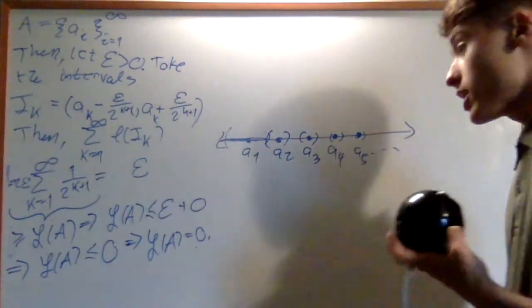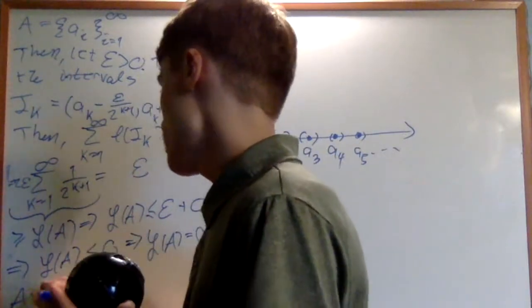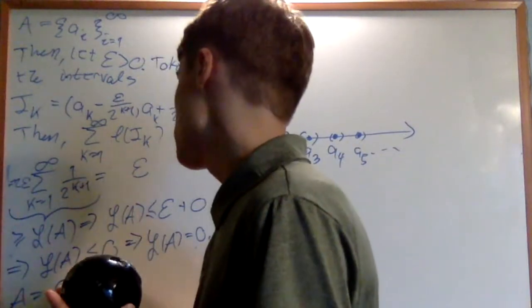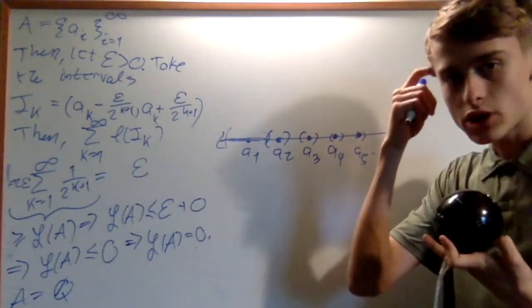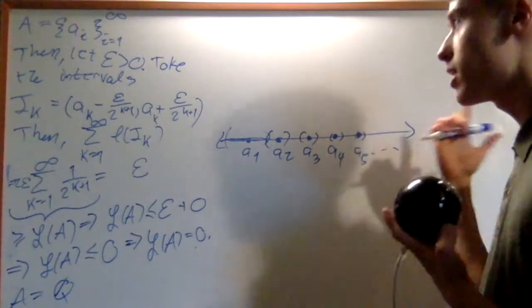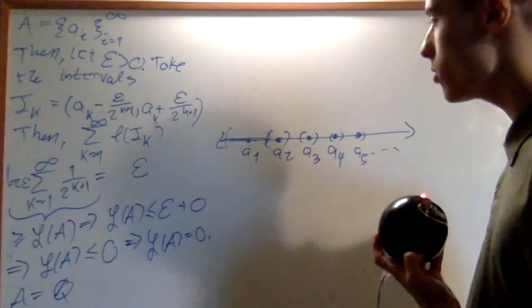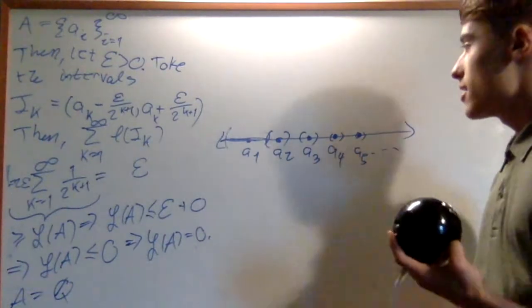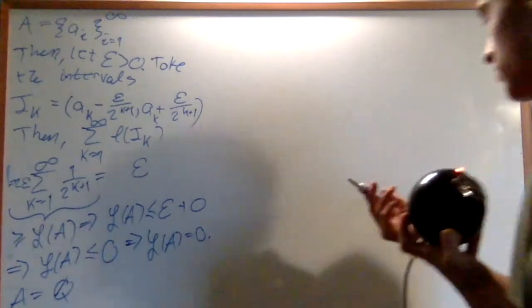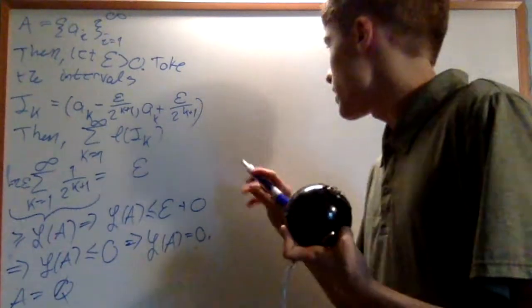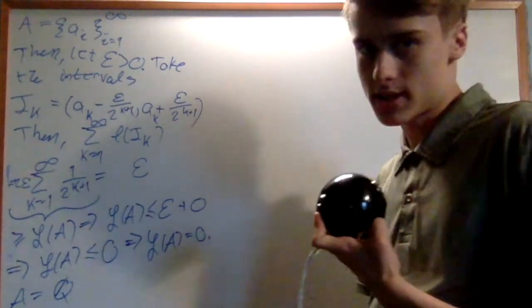A good example of this is the rationals — A could equal ℚ. This is a proof that the rationals have Lebesgue measure 0, which is a very important fact.